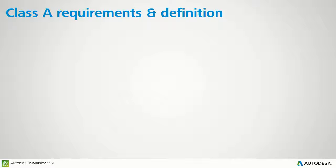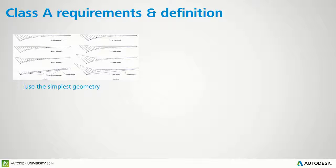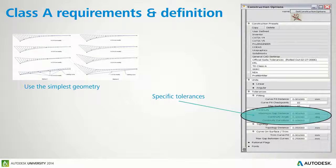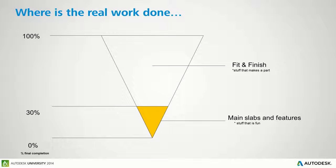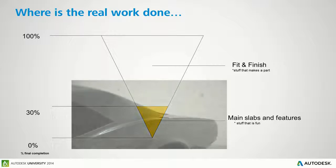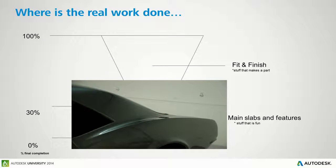Typical Class A requirements include using the simplest geometry, maintaining construction tolerances, and using Bezier versus NURBS. These are the concepts and things people say you have to know as a Class A surface person. In my view, though, there's an area of work where about 30% is making big, nice, beautiful surfaces — that's what everybody wants to do when they want to be a Class A modeler. They want to make the big body panels of a car. That's only a tiny portion of the work.